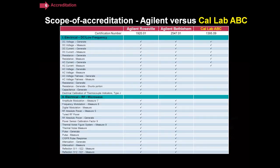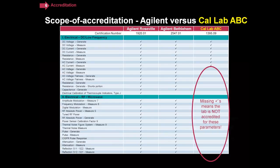I want to show you an actual comparison of scopes of accreditation for several labs. The Master Hub in the Americas is in Roseville, California, and I also have a second column from our Bethlehem lab, just outside of Philadelphia. There's a third lab there in the same proximity. You'll notice check marks in the first two columns on the Agilent labs for many capabilities, yet in many cases there's no check mark on the right-hand side. Any category without a check mark means the auditor did not check any of those things for those parameters — and shortly I'll show you why that could be significant to your company.